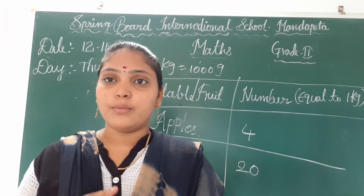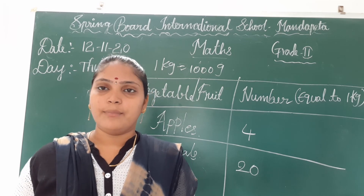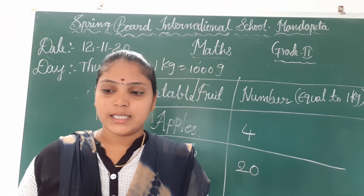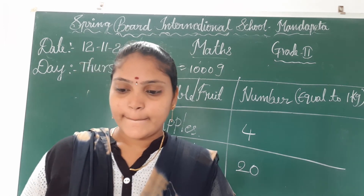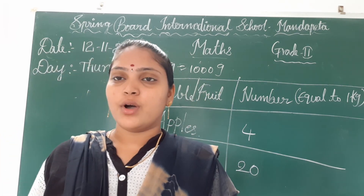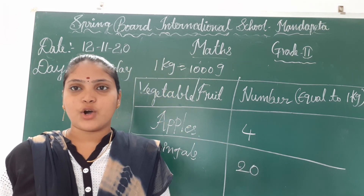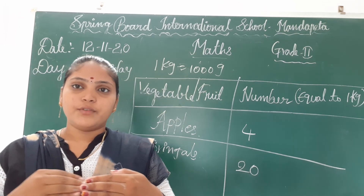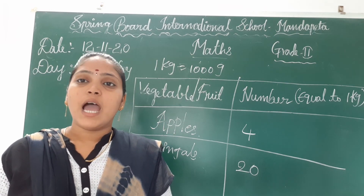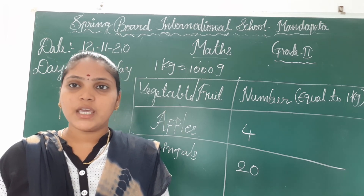We use these two measurements to measure the mass of objects. The short form of gram is g and the short form of kilogram is kg. One kilogram is equal to one thousand grams. Gram is the smaller unit and kilogram is the bigger unit. For lighter objects, we use grams; for heavier objects, we use kilograms.